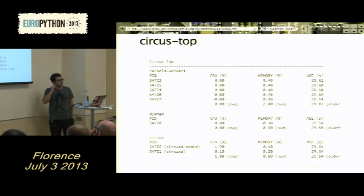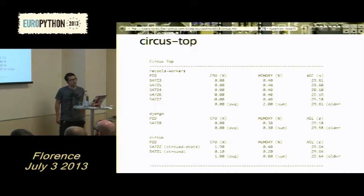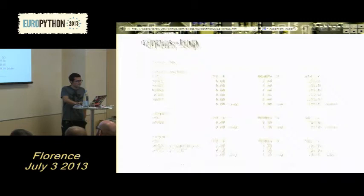CircusTop is built using curses. It gets all the stats from CircusD-stat and refreshes the screen, giving you the CPU usage, memory usage, and age of each process you're watching. I love it — a lot of people don't use it, but I wanted a top-like tool in Circus and I use it a lot.